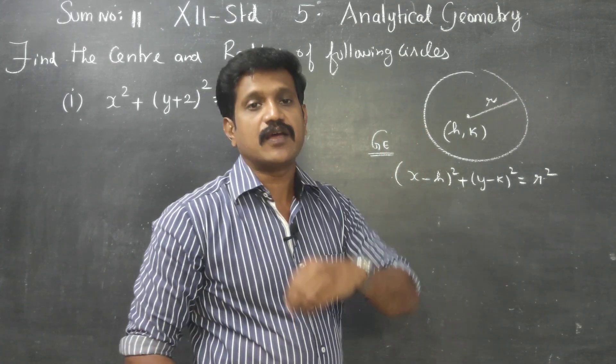Therefore, for identification of center, I am going to give the formula: (-g, -f). For radius: radius equals square root of g² + f² - c.